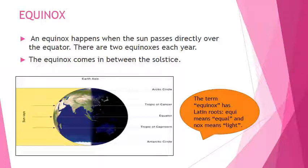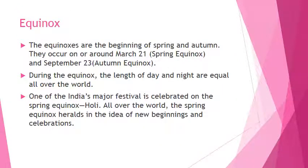Equinox. An equinox is when the Sun passes directly over the equator. There are two equinoxes each year. The equinox comes in between the solstices. The equinoxes are the beginning of spring and autumn.